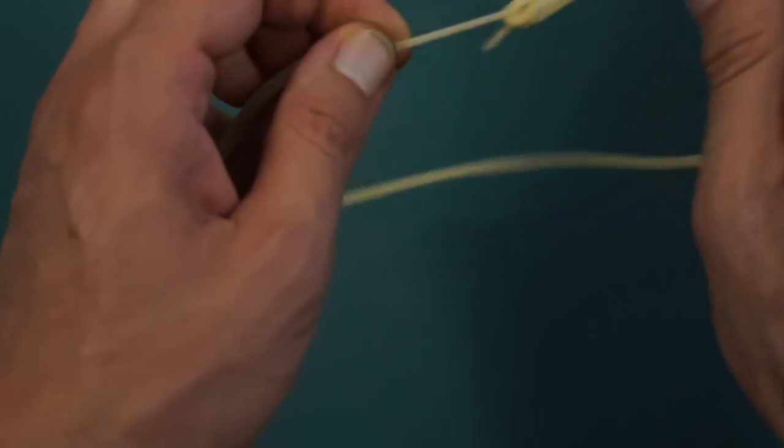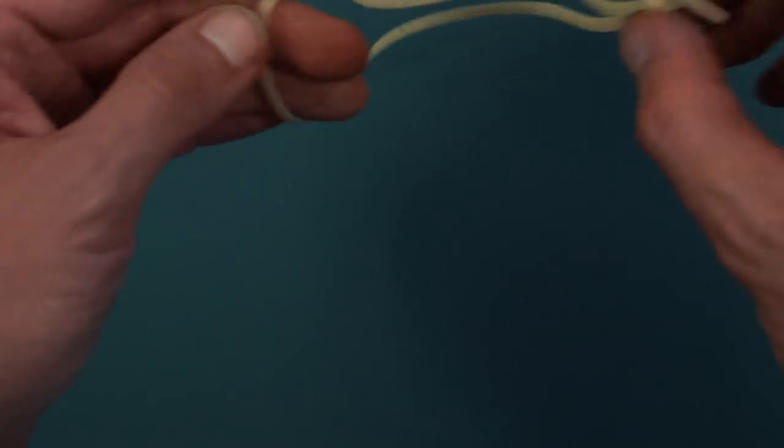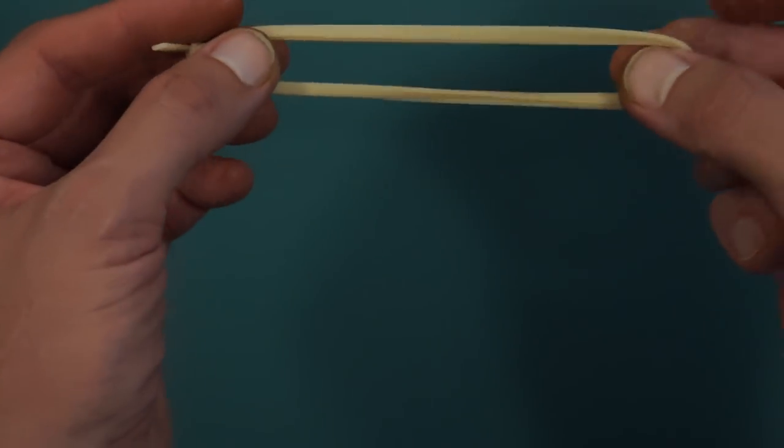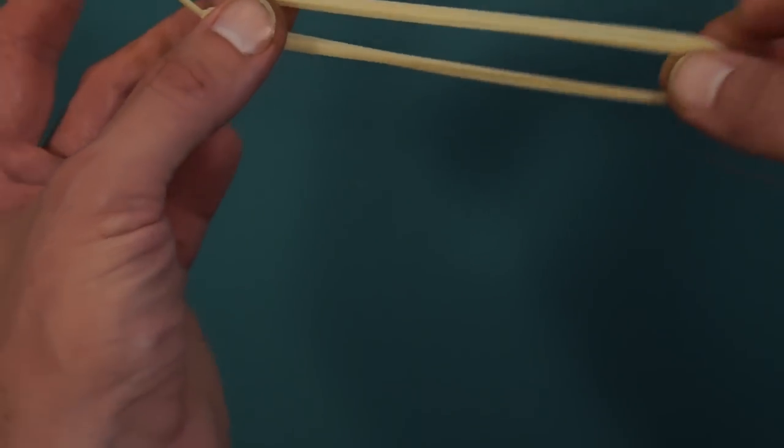And just make sure it's secure. We're going to actually double the rubber band like this when we put it on the model. If you don't do that you won't have enough torque. The model won't fly.